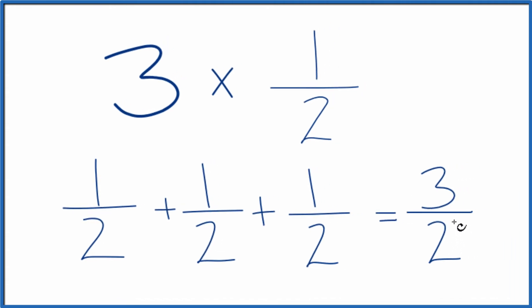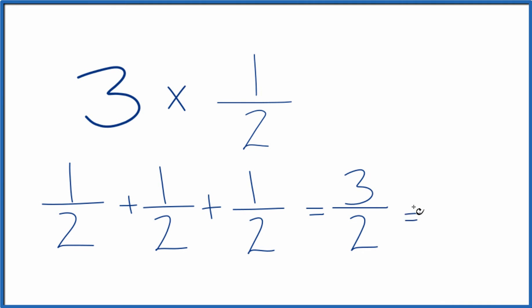This is an improper fraction because three is larger than two, so you could change it to a mixed number. Two goes into three one time with one left over. Bring the two over. So 3/2 is the same as the mixed number 1 and 1/2.